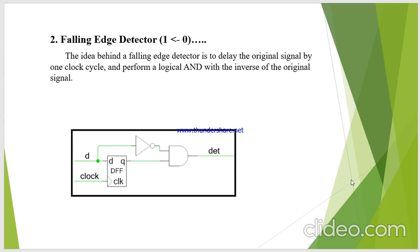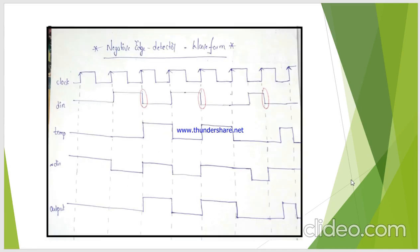Along with that, my input signal — I have taken the inverse and given it to the AND gate as another input. That will detect the falling edge. Let's see it with an example waveform. I have my clock signal and my D input signal. This input has negative edges as well. TMP1 signal is the output from the D flip-flop, which delays the input signal by one clock cycle.